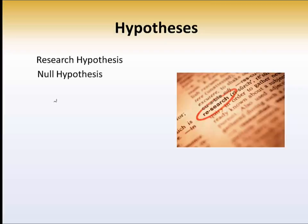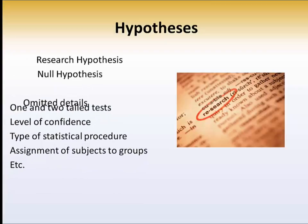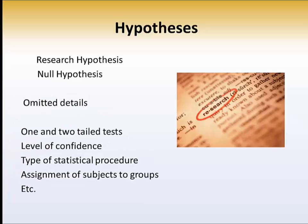Now there's many other issues that we are going to omit at this point, but we will cover these in later chapters in the text. This refers to the types of tests, how confident you can be about your answer, which statistical procedure should you use, how many subjects should there be, and how are they assigned to groups, and so forth. So those are many things that you're going to yet see.